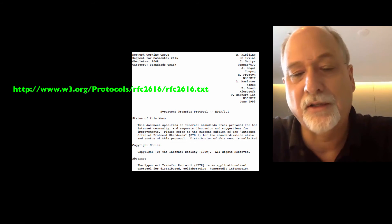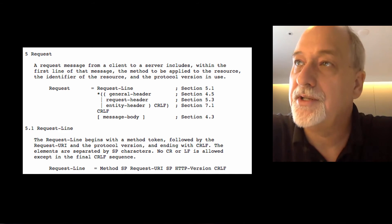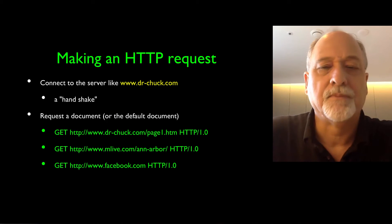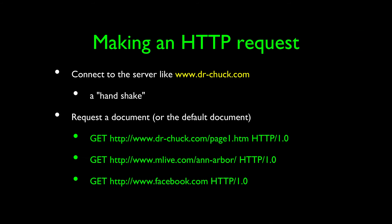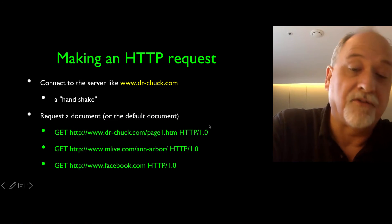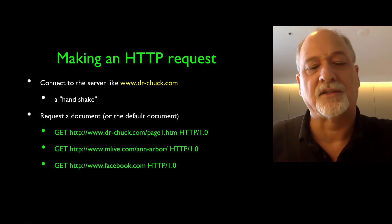You can download RFC 2616 and look through it. If you look far enough down, you'll find in Section 5 how you're supposed to send data when requesting a new document. It's pretty simple: you connect to a server on port 80 and ask for the document. You send the GET command, the document you're looking for, and then tell it which version you're using. Old stuff was HTTP 1.0; HTTP 1.1 has been around for years, and now HTTP 2 is coming out.